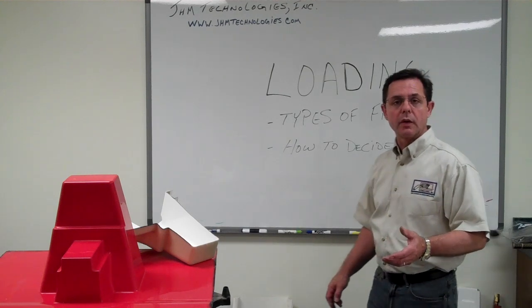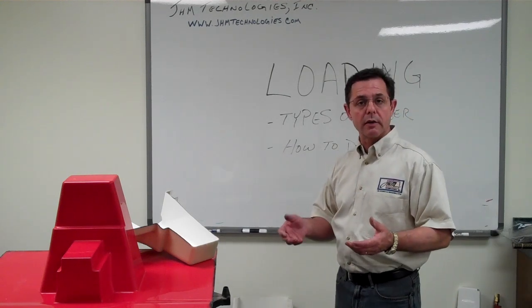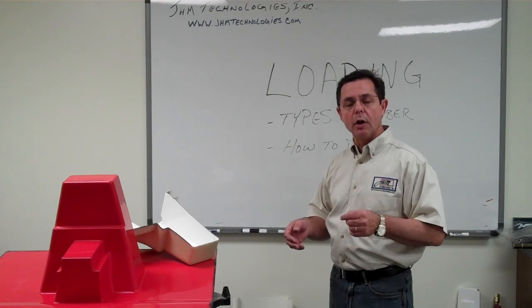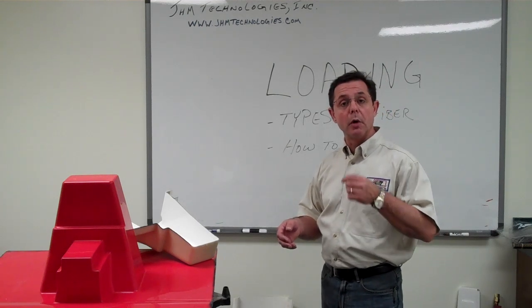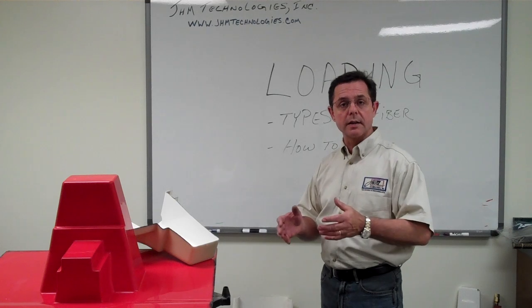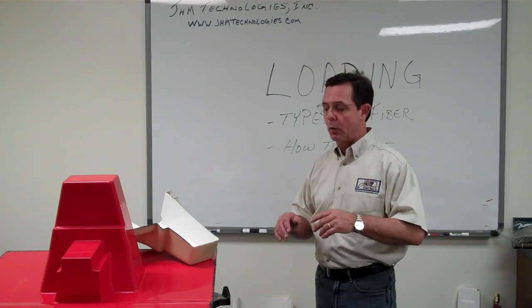The things that we're going to look at are the types of fiber and then how to decide. Obviously, the fiber is giving us the greatest amount of strength in the overall performance of the composite. Yet, the loading of the fiber into the mold is most critical to the process and the ability to control the resin flow path.